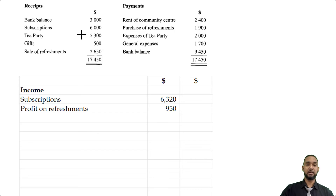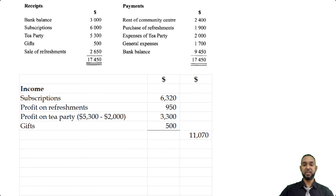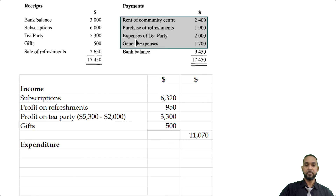Tea party had income of $5,300 but on the credit side we see expenses of tea party $2,000, so we net those off: $5,300 minus $2,000. The last income item is gifts, which requires no adjustments. Now for expenditure: purchase of refreshments was already dealt with in the refreshments trading account, and expenses of tea party were netted off in the income section, so we move to remaining expenditure items.